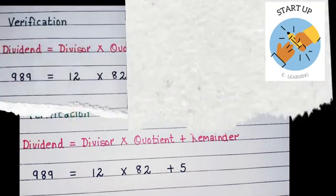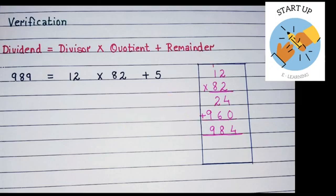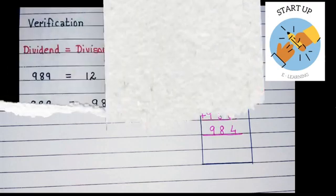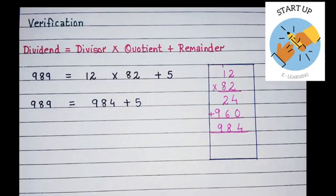This we can do on our rough side also. By multiplying 12 by 82, we got the product 984. So it means 989 = 984 + 5.